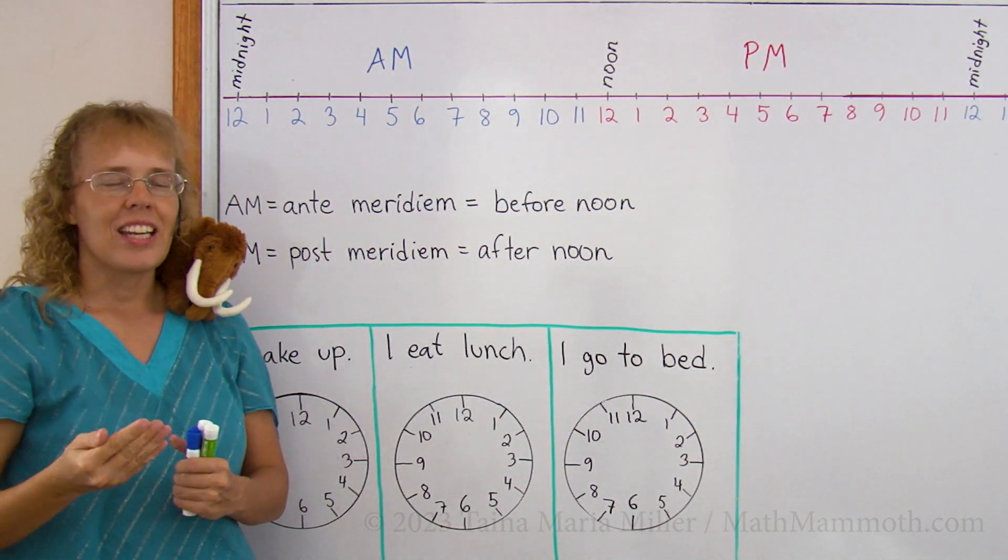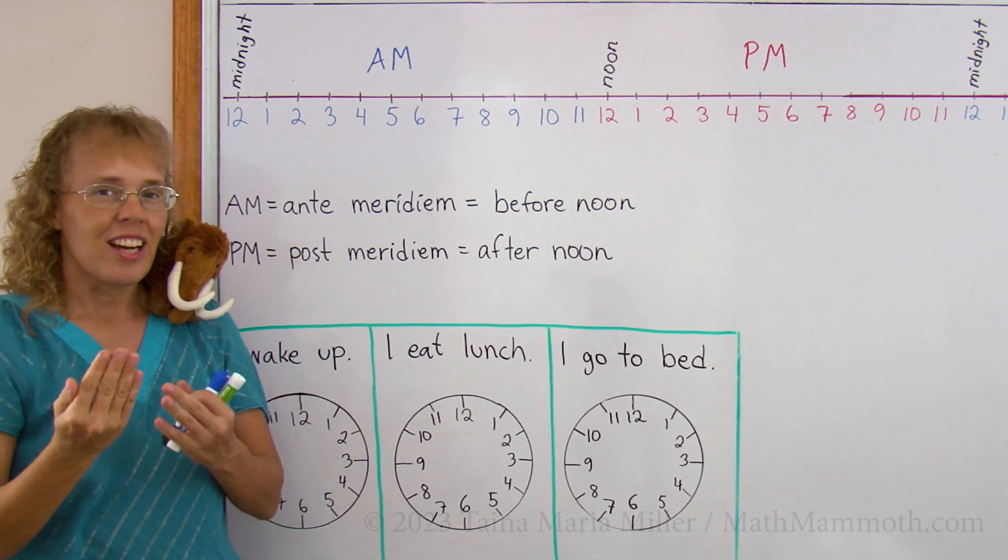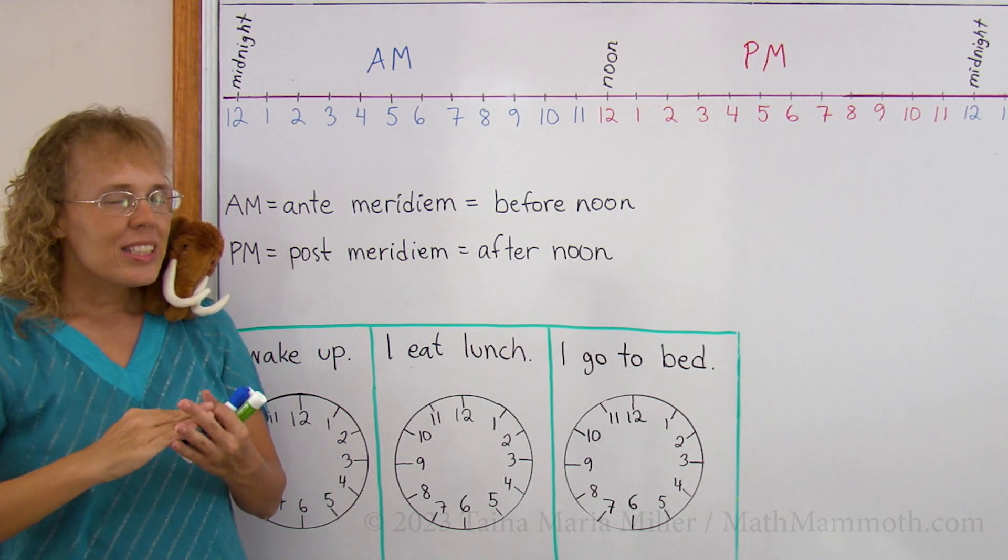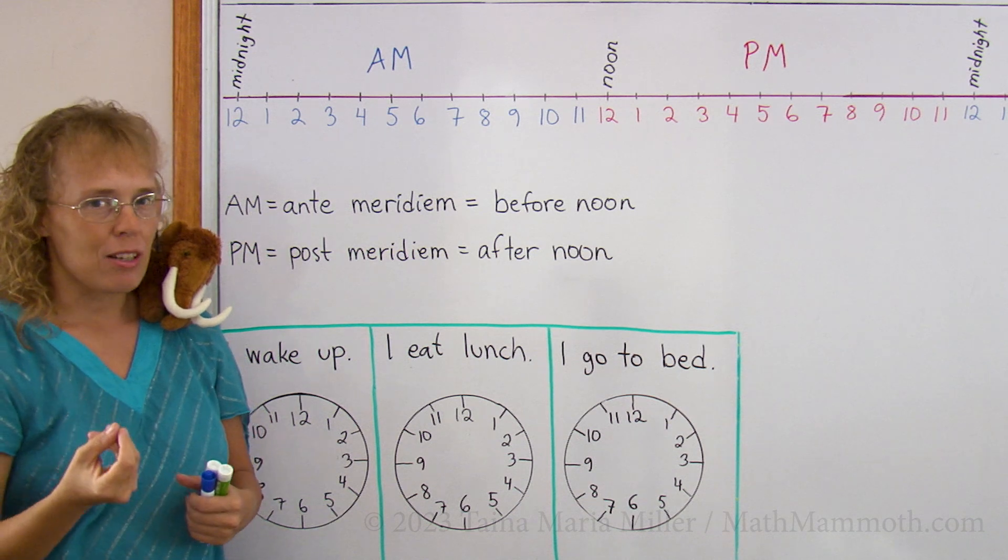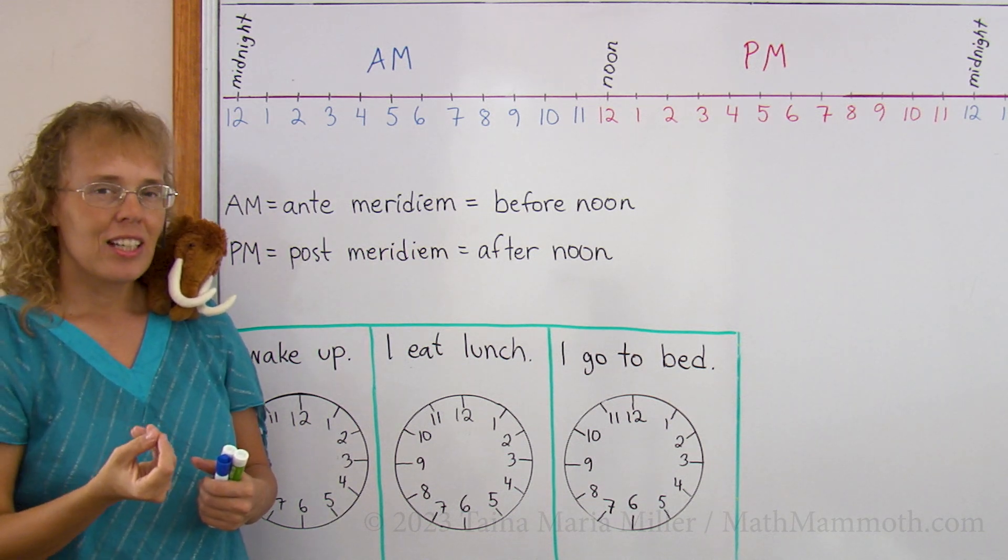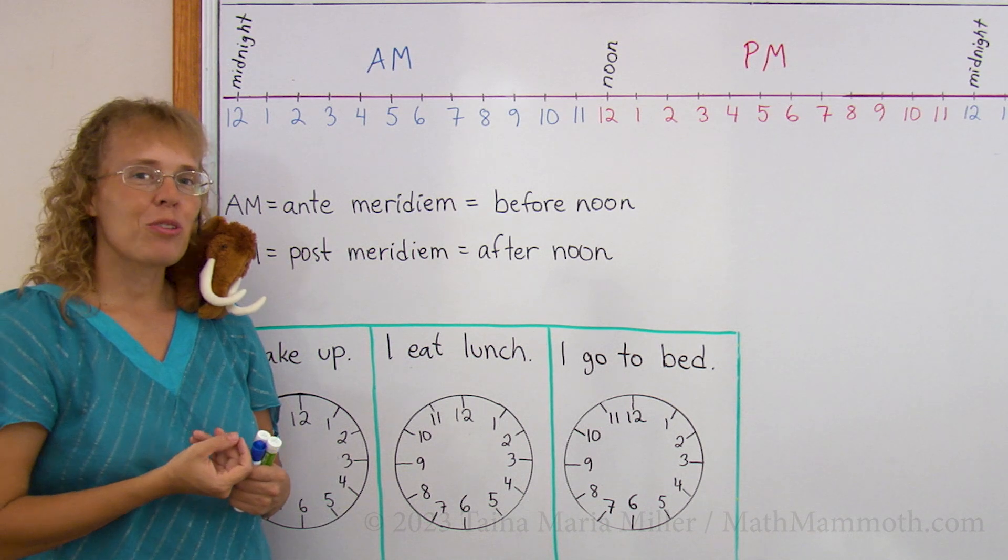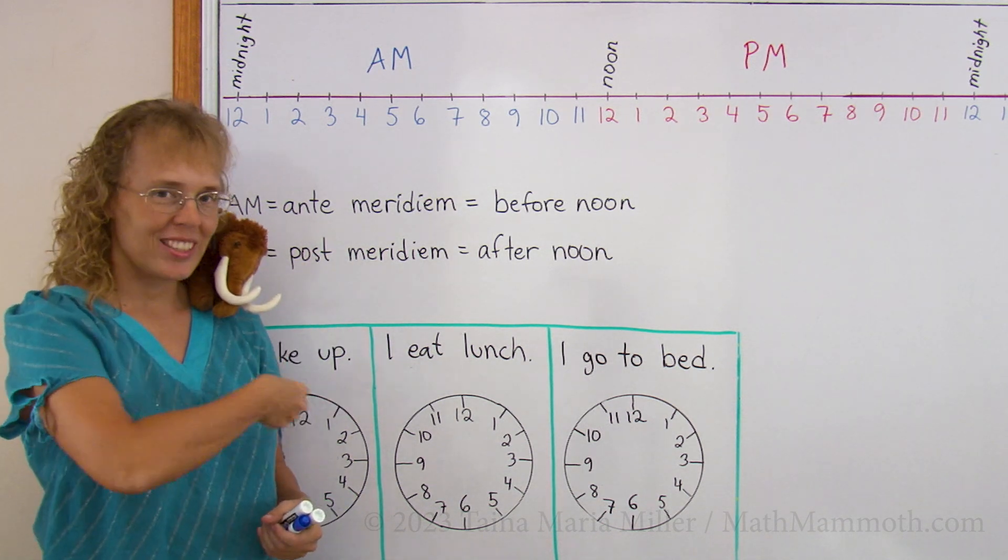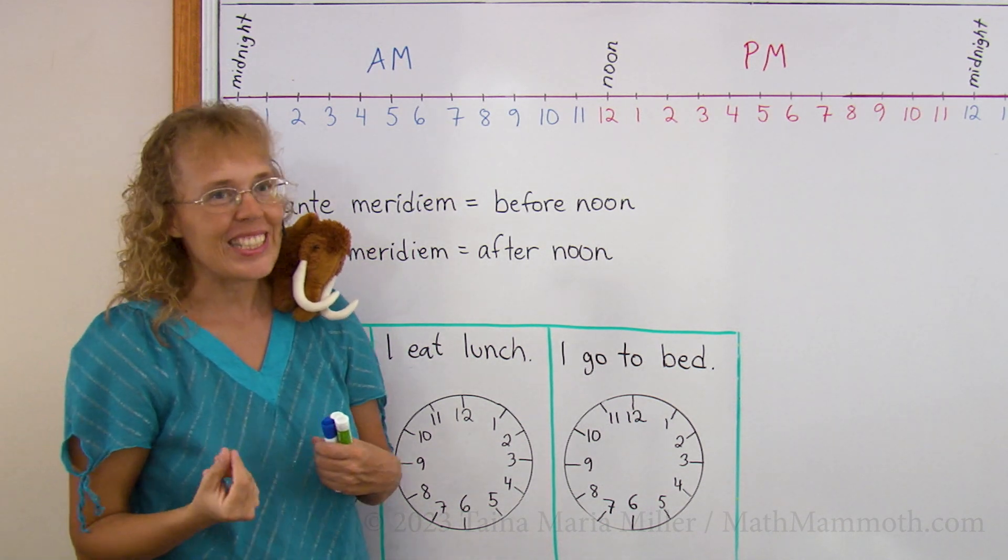So for complete day, or you can think of it as a day-night period, for complete day-night period, we need 24 hours, 12 and 12. On the clock, the hour hand has to go through those 12 hours twice in a complete day.